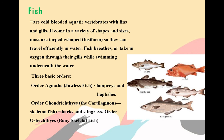Fish are cold-blooded aquatic vertebrates with fins and gills. They come in a variety of shapes and sizes. Most are torpedo-shaped or fusiform, so they can travel efficiently in water. Fish breathe by taking oxygen through their gills while swimming underwater. The three basic orders of fishes are: Order Agnatha — the jawless fish, with examples like lampreys and hagfishes; Order Chondrichthyes — the cartilaginous skeleton fish, like sharks and stingrays; and Order Osteichthyes — the bony skeletal fishes.